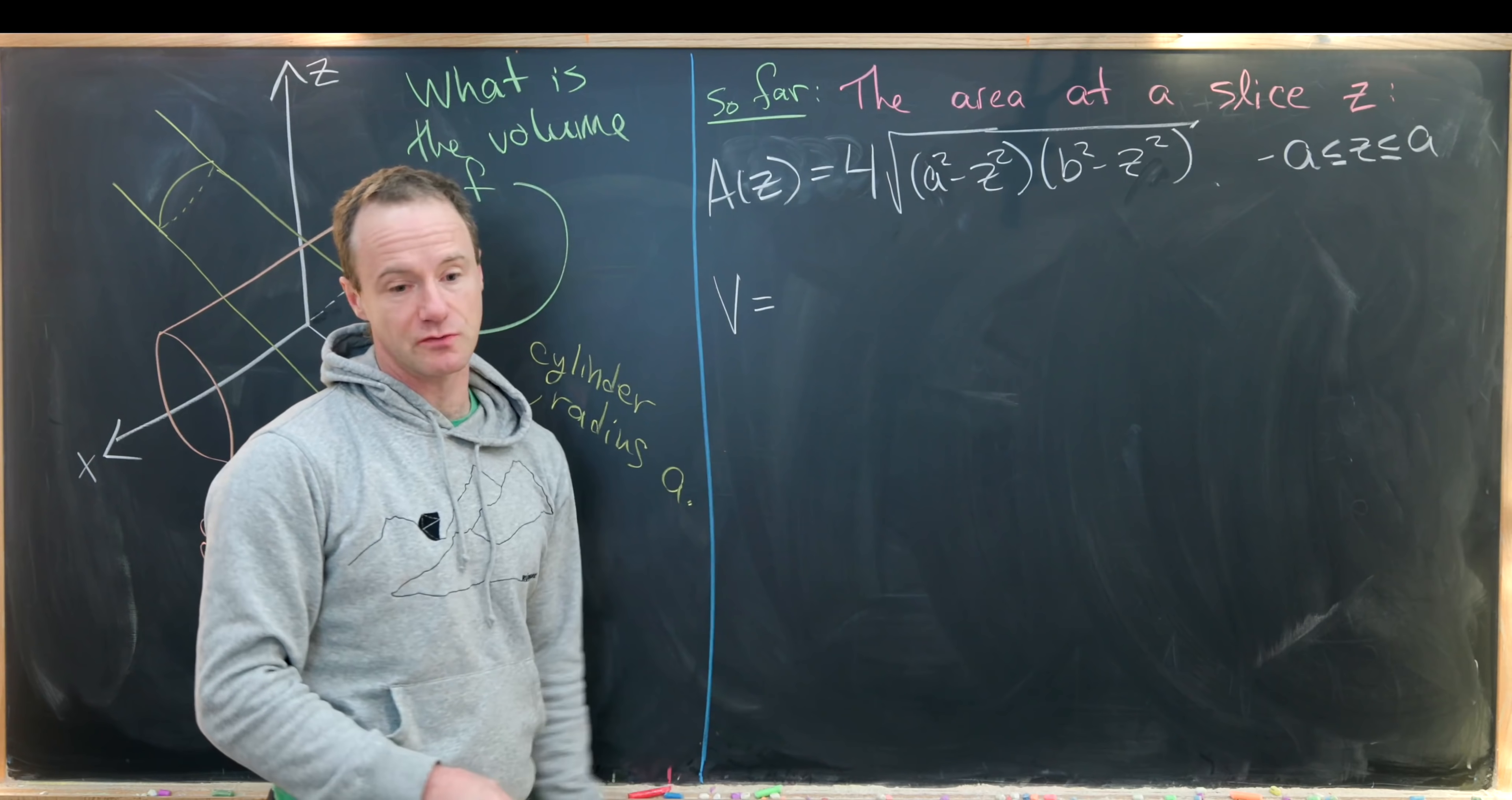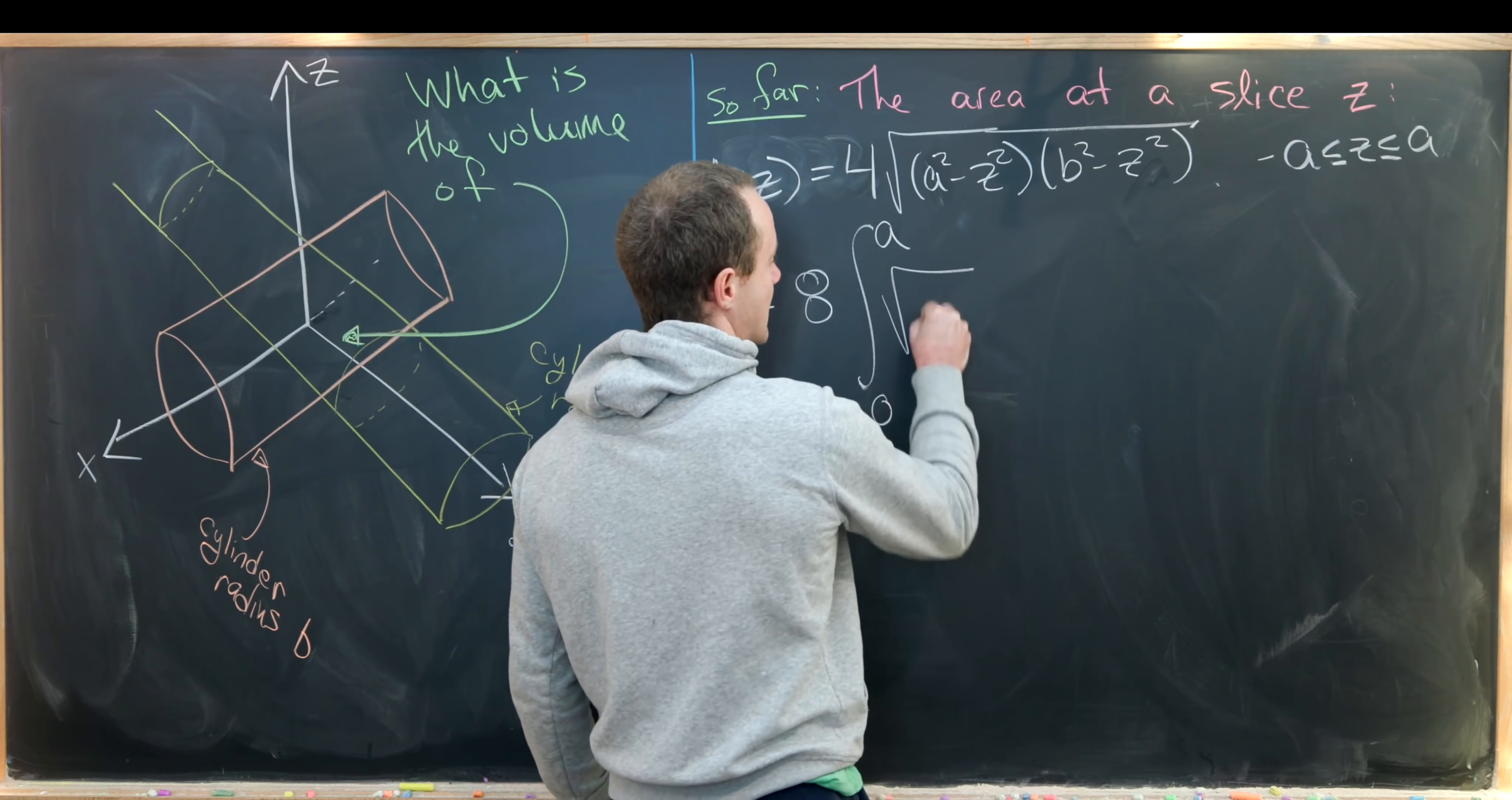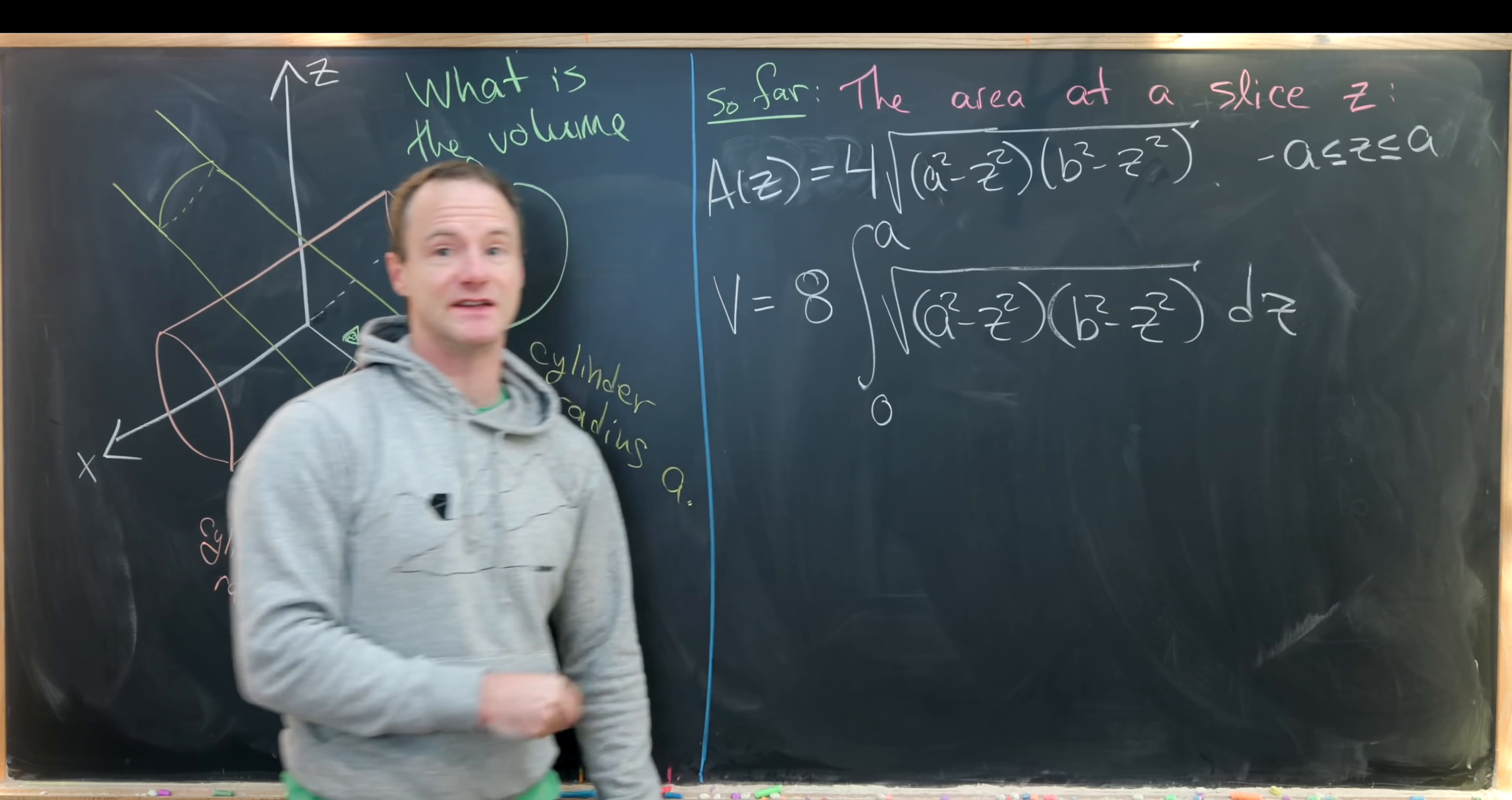That means we can just double it and integrate from zero to a. So if we double it and also multiply by four, that will give us 8 times the integral from zero up to a of the square root of a² - z² times b² - z². Now we have that integral to calculate.